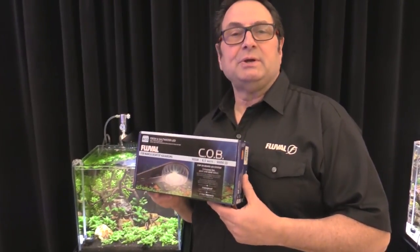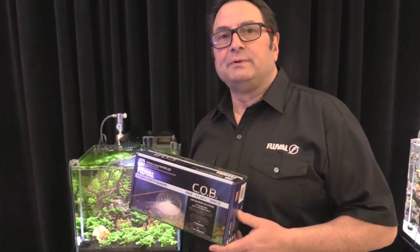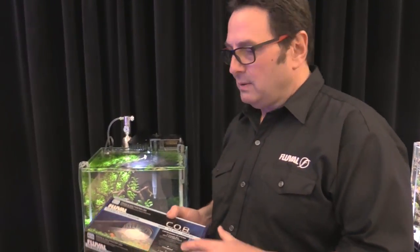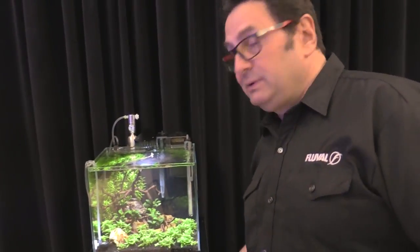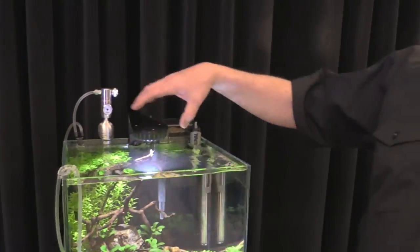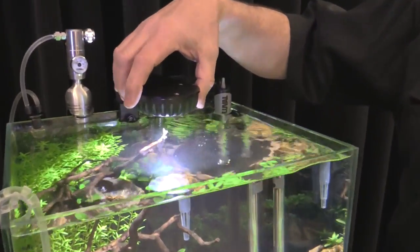Hey guys, today we're talking about the COB LED lighting system for desktop and nano aquariums. COB refers to chip on board technology, which means a whole bunch of micro LEDs that we incorporate within this unit, improving both spectral and luminous output efficiency.